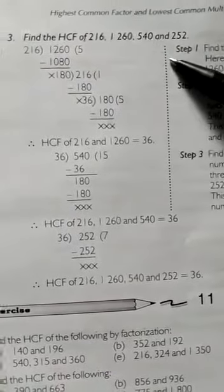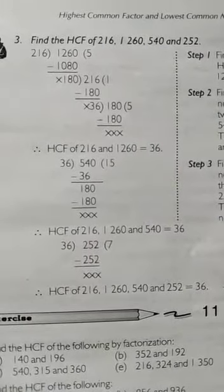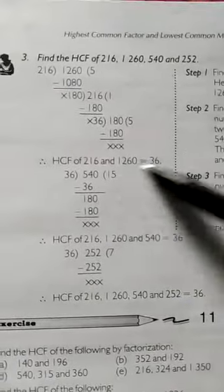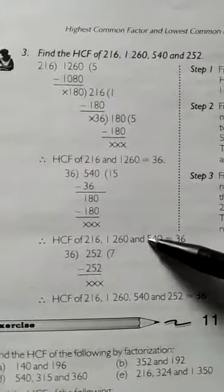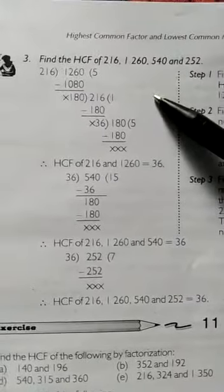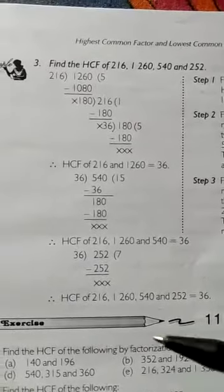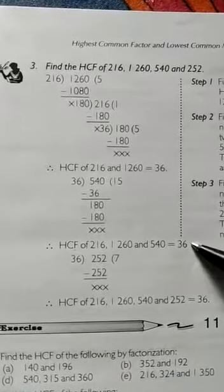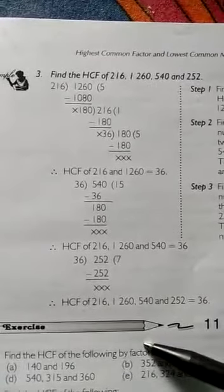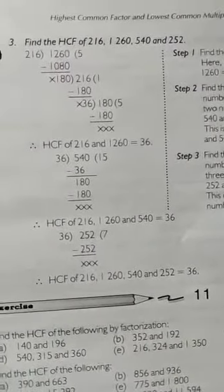Example 3: find the HCF of four numbers. In Step 1, the HCF of 216 and 1260 is 36. In Step 2, the HCF of 36 and the third number 540 is also 36. Finally, the HCF of 36 and the remaining number 252 is 36. That's enough for today's class, thank you.